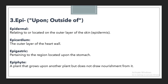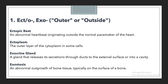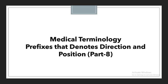The last example for EPI is epiphyte. Epiphyte means a plant that grows upon another plant but does not draw nourishment from it. Here again we are showing something growing upon another plant, which is why we use EPI to denote the sense of upon or outside. These are the prefixes used to showcase direction, position, or location.